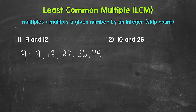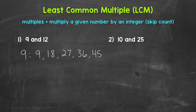You can see we just skip counted by 9 to list those multiples. I stopped at 45 because multiples go on forever — they are endless, they are infinite. My suggestion is to list 4 or 5 multiples when looking for the least common multiple. List 4 or 5 multiples for each number, look for any in common, and if you don't have any in common, you can always extend the multiples lists.